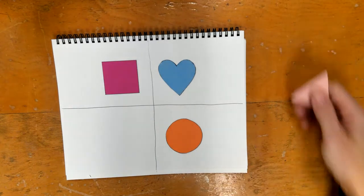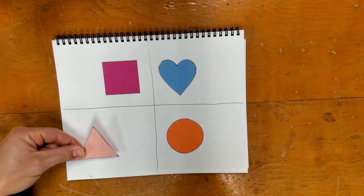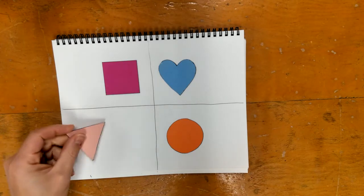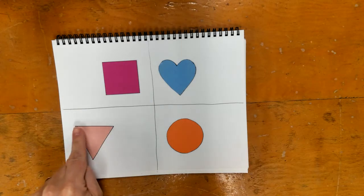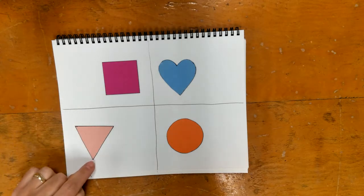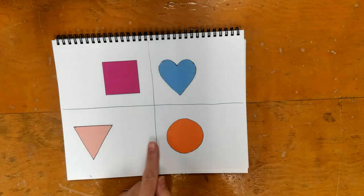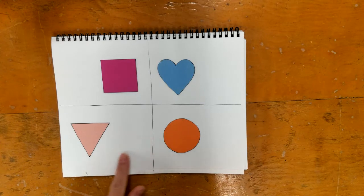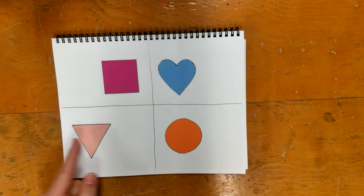And then the last shape is our triangle. And for the triangle, normally we have triangles with the point that goes up. We're going to flip it so that the straight line is up at the top and the point is down at the bottom. And what we're going to do with this one is we are going to move it over here so that we have a lot more space here. And it's close to the edge of the paper.